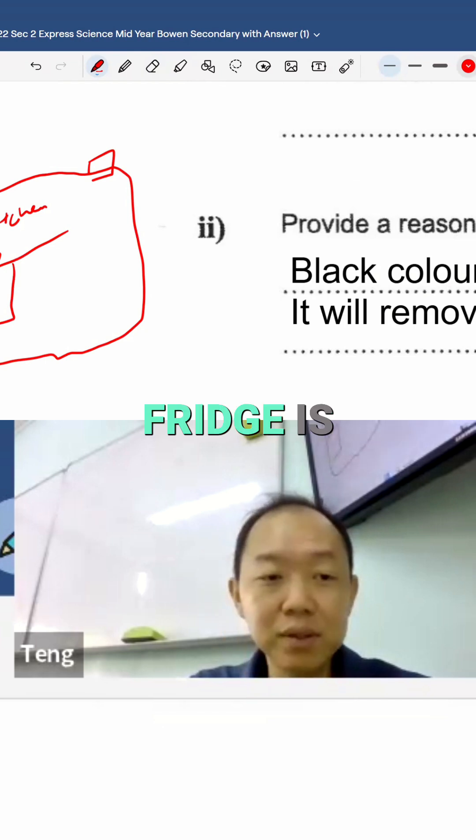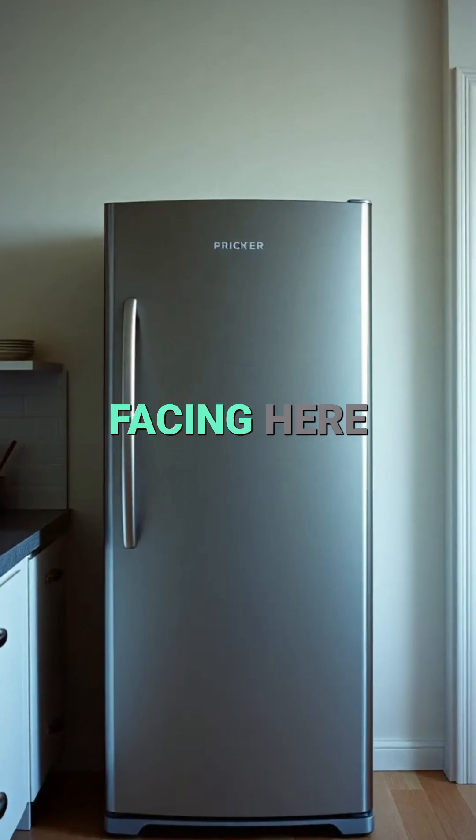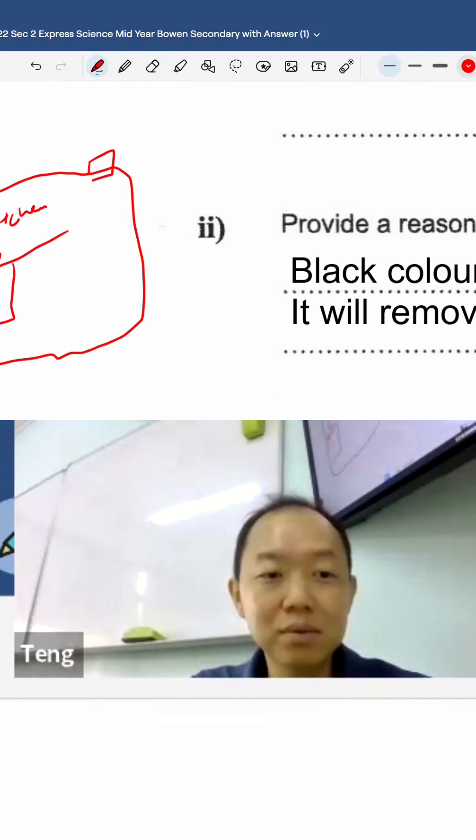The bedroom. So the fridge is facing here, right? But then the back of the fridge is facing here, so you could have placed your bed here. You know what I mean?